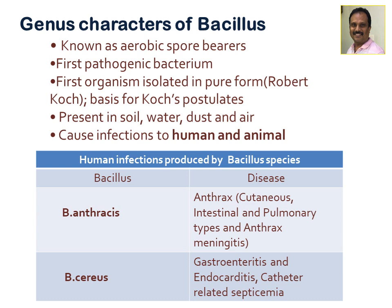These are unique characteristics of the genus Bacillus. It was the first organism isolated in pure culture by Robert Koch, based on which he postulated Koch's postulates — to say any organism which is a causative agent for pathogenesis. These organisms are present in the soil, water, dust, and air, and cause infections in human beings as well as animals.